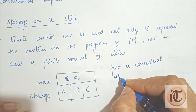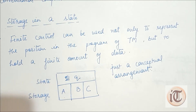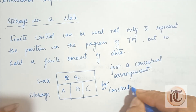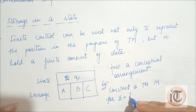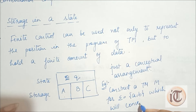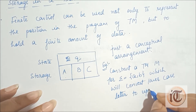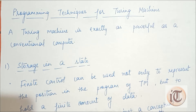This technique allows us to describe transitions in a more systematic way, often making the strategy behind the Turing machine program more transparent. It is essentially a conceptual arrangement. To illustrate with an example: if we have to construct a Turing machine M for input symbols A and B which will convert a lowercase letter to uppercase, we can use this technique. This is the first technique.